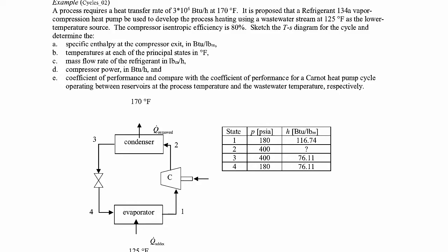In this example we're looking at a heat pump cycle. We're told that we require a heat transfer rate of 3 million BTUs per hour at 170 degrees Fahrenheit. This is the heat transfer rate up into the hot reservoir. Recall that this region is the hot reservoir, and the purpose of a heat pump is to move energy into the hot reservoir.